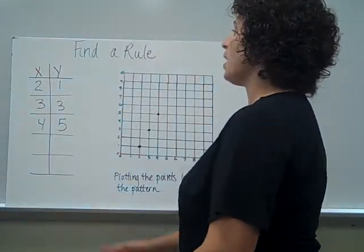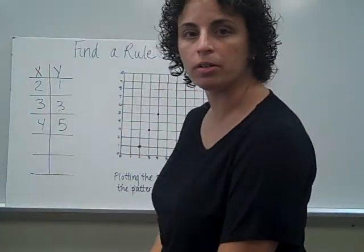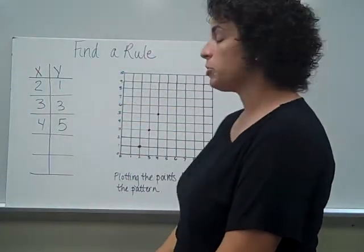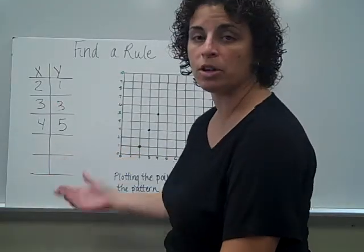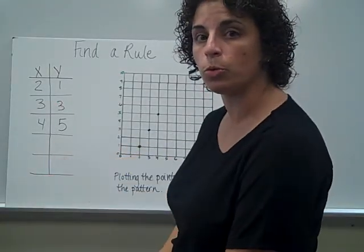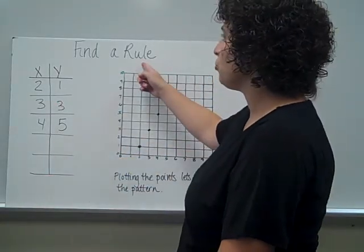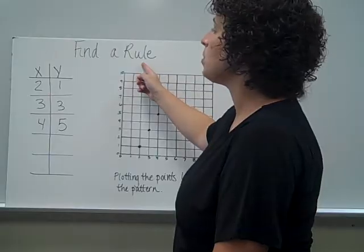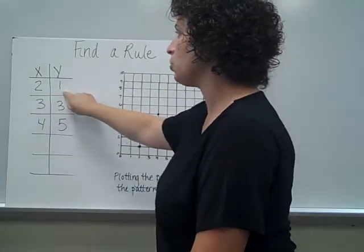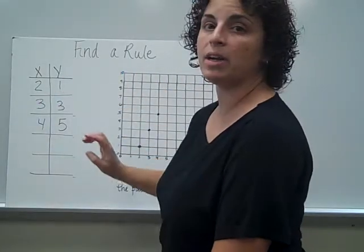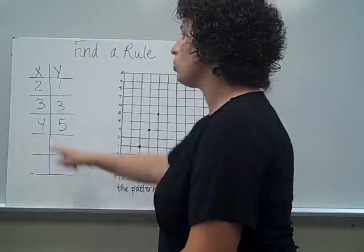Finding a rule lets us see how the coordinates are related. This will also let us continue the pattern and find new ordered pairs. When I'm looking for a rule, I'm not looking from x to y. Right now I'm looking at just the x coordinates.